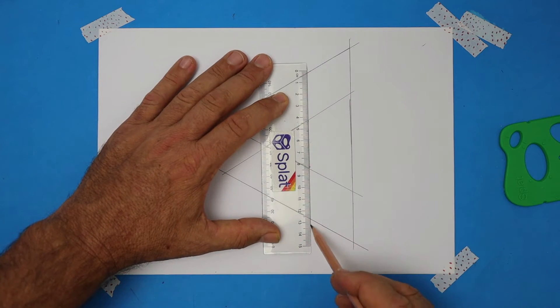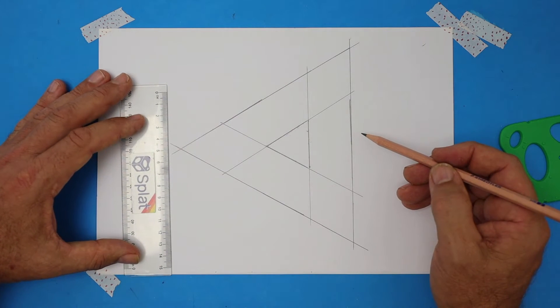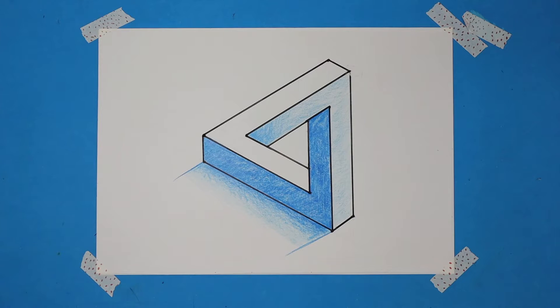First, we're going to draw using very light pencil guidelines and after that you might darken yours in with pen or marker.